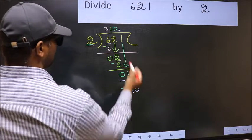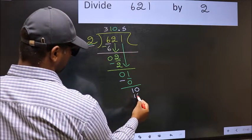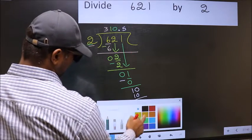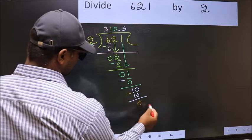When do we get 10 in 2 table? 2 fives, 10. Now you subtract. 10 minus 10, 0.